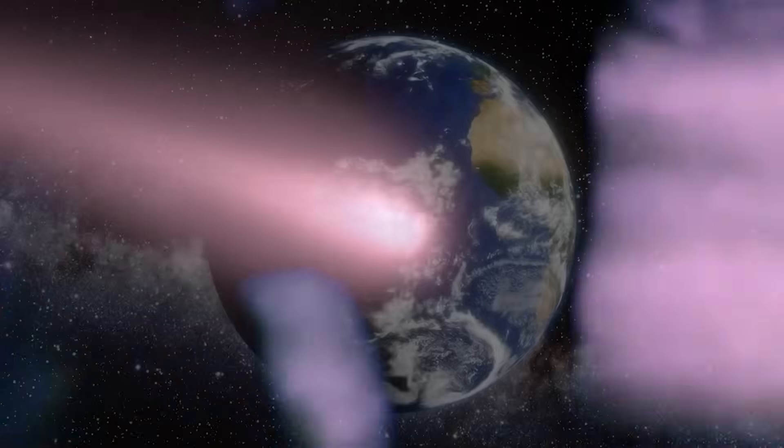A mysterious object from another star system is racing toward Earth, and NASA just confirmed exactly when it will arrive. For the first time, astronomers have months, not days, to track an interstellar visitor.